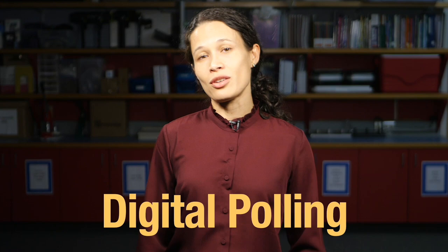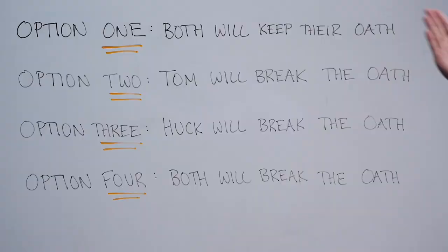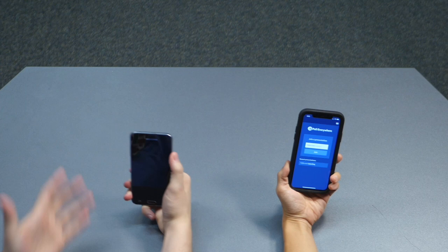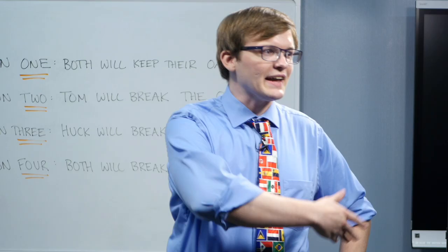Number one: digital polling. Many free-to-use polling apps exist and only require the use of a computer and an electronic device. For this digital poll, let's ask a predictive question to get our students engaged in the lesson. Yesterday we found out that Tom Sawyer and Huck Finn took an oath to never tell what they witnessed. Do you think they'll be able to keep their promise? Take out your phones and join the poll. It looks like most of you think that both will keep their oath. Well, today we're going to find out.